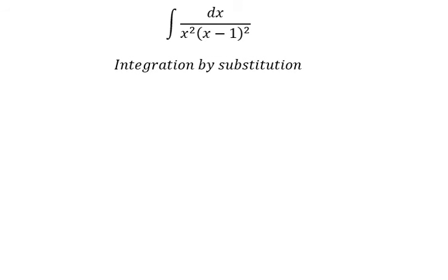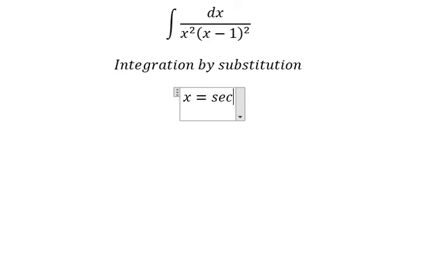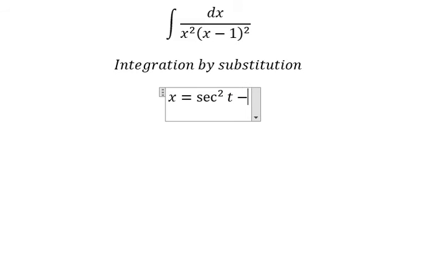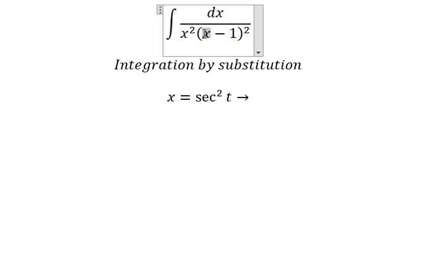We put s equal to secant of t squared. Because we want to substitute this in, secant of t squared minus one can be changed to tan t squared. This is the reason why we need to put it like this.